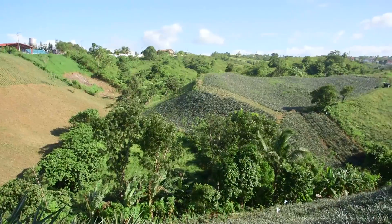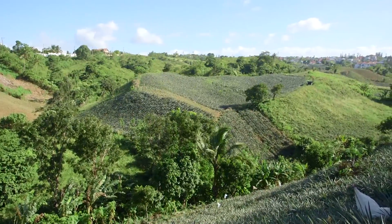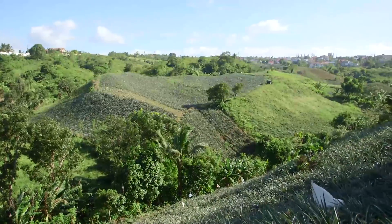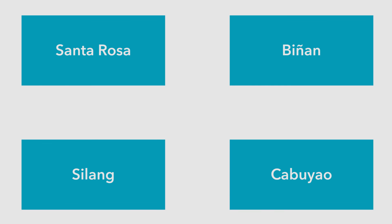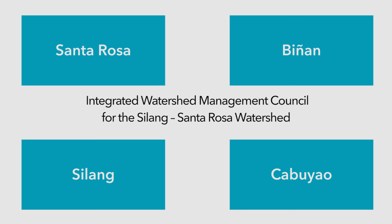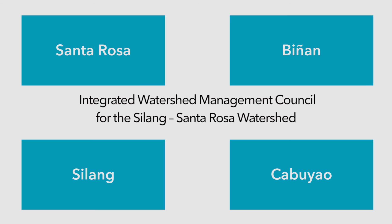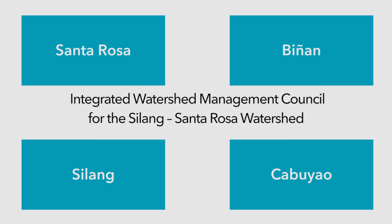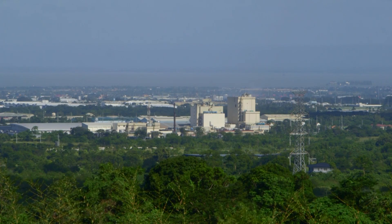Another major contributing factor to flooding in the city is the development activities taken by the neighboring towns, particularly in the upstream areas. This situation requires coordinated action across the watershed, and the integrated planning of all local government units within the watershed is essential. Building off the work initiated in this pilot project, the recently established Integrated Watershed Management Council for the Silang-Santa Rosa Watershed was initiated through an agreement among the four local government units and the Laguna Lake Development Authority, and has legally laid down the framework for an ecosystem-based integrated approach to management and development in the area of the watershed.